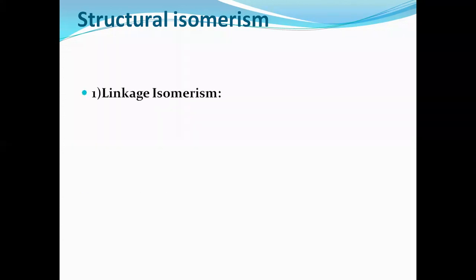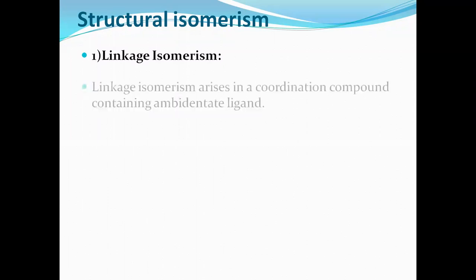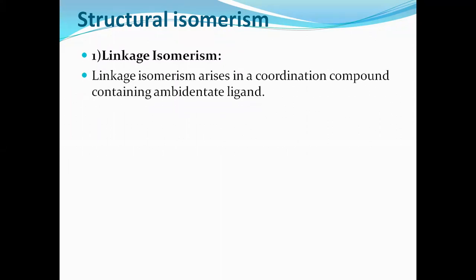First one: linkage isomerism. The word itself says 'link', which refers to the linking between the central metal atom and the ligands. Two or more complexes or coordination compounds having the same molecular formula but differing in the linking atom of the ligand with the central metal atom. This type of isomerism exists only when there is an ambidentate ligand in the complex.